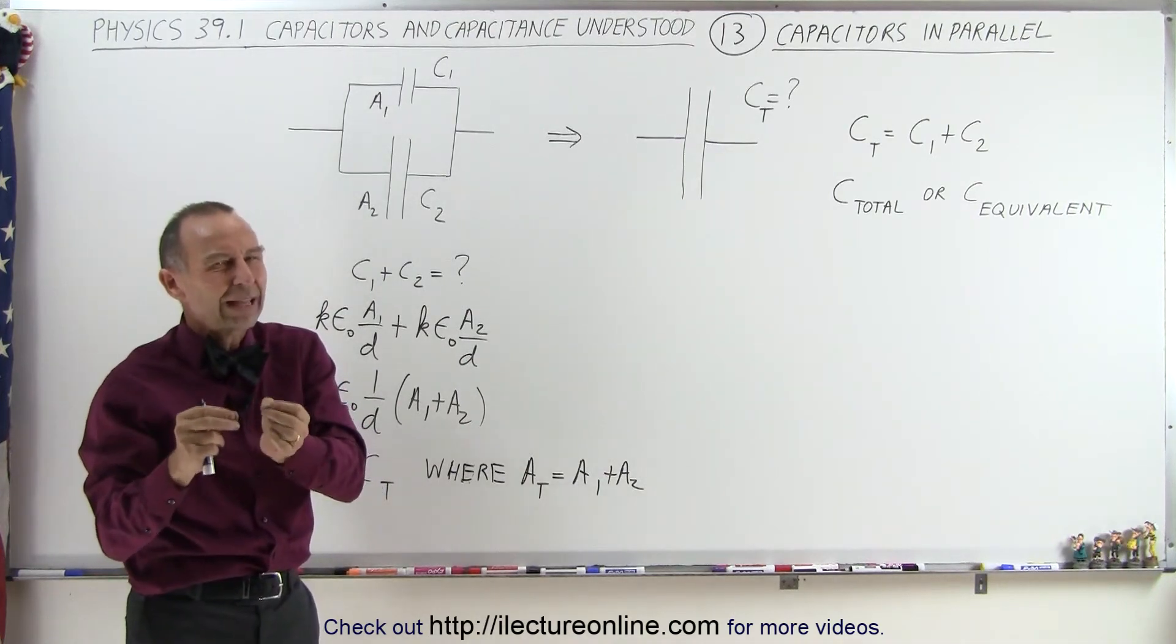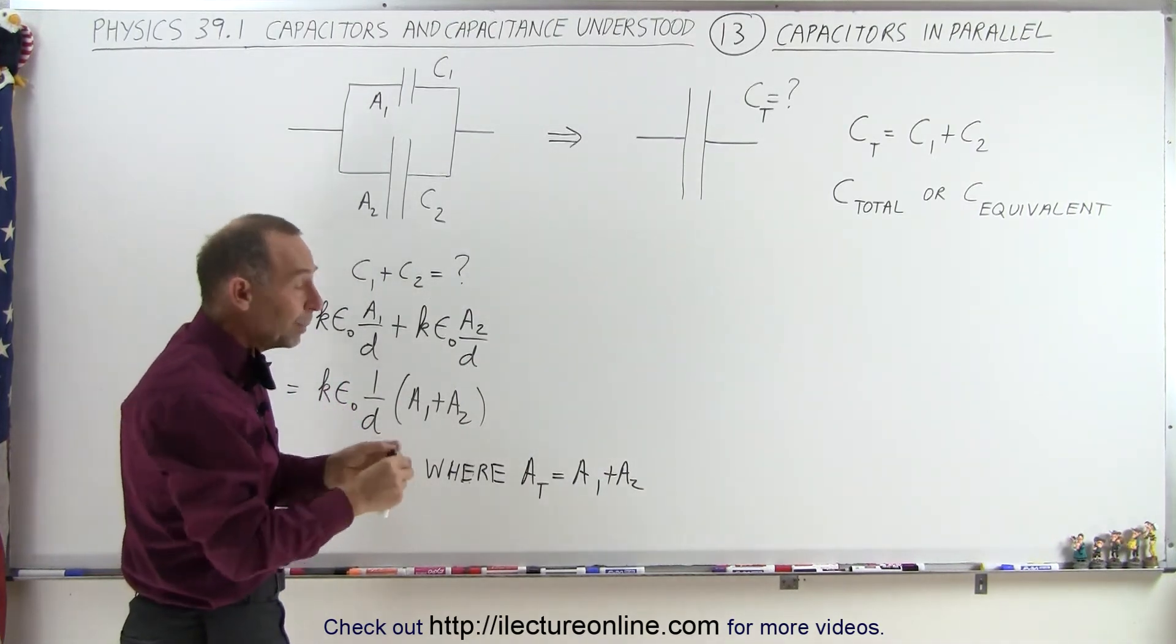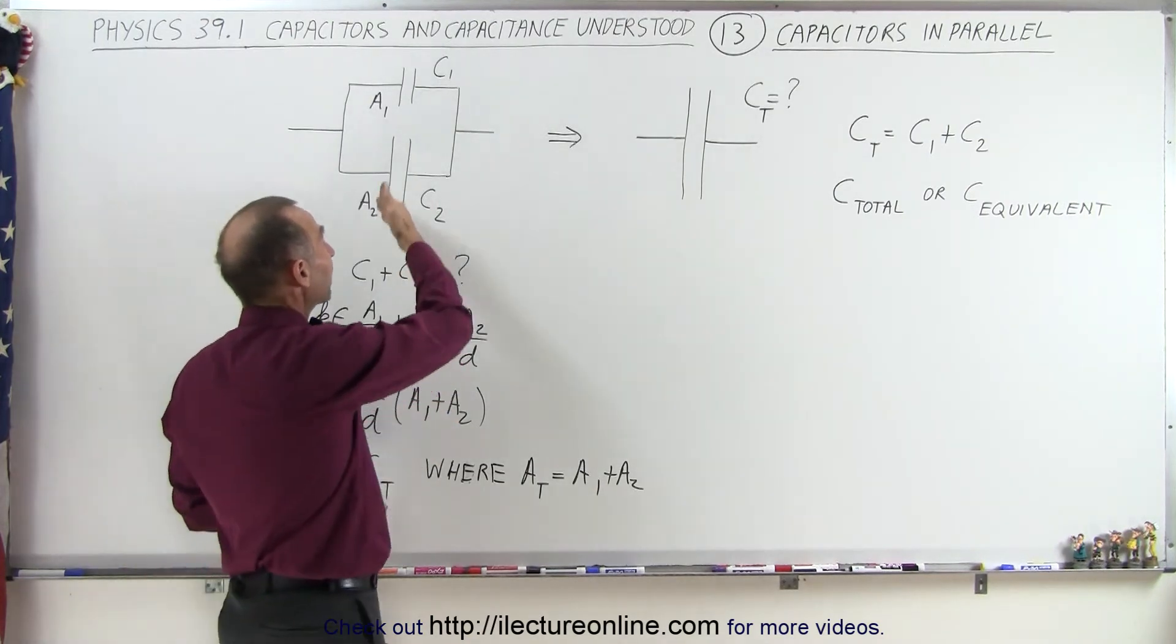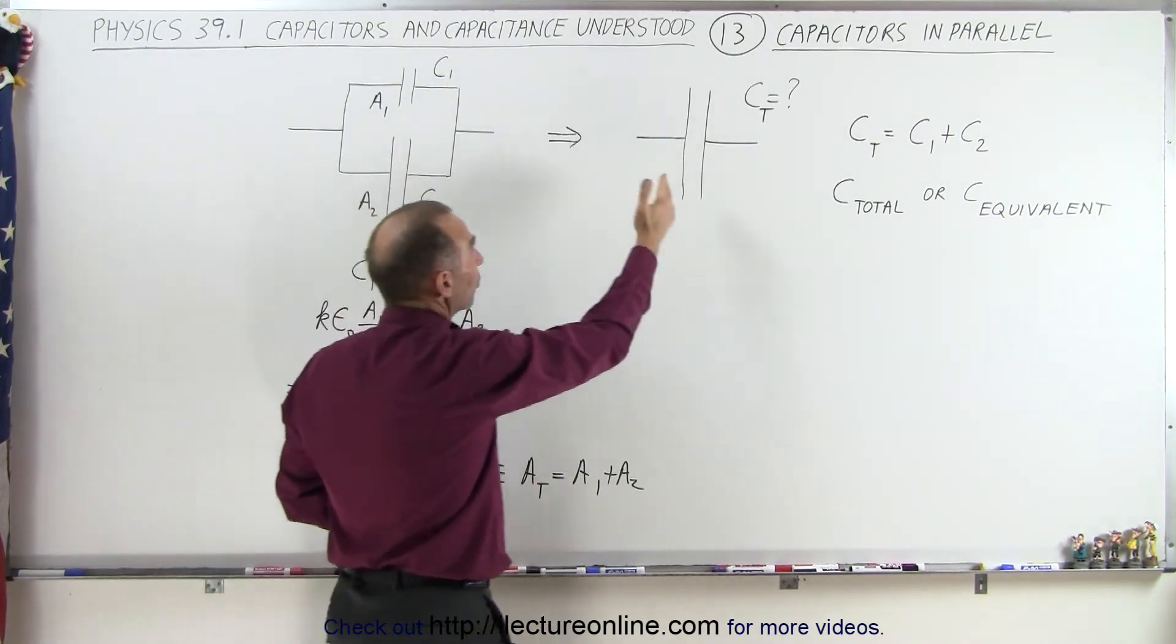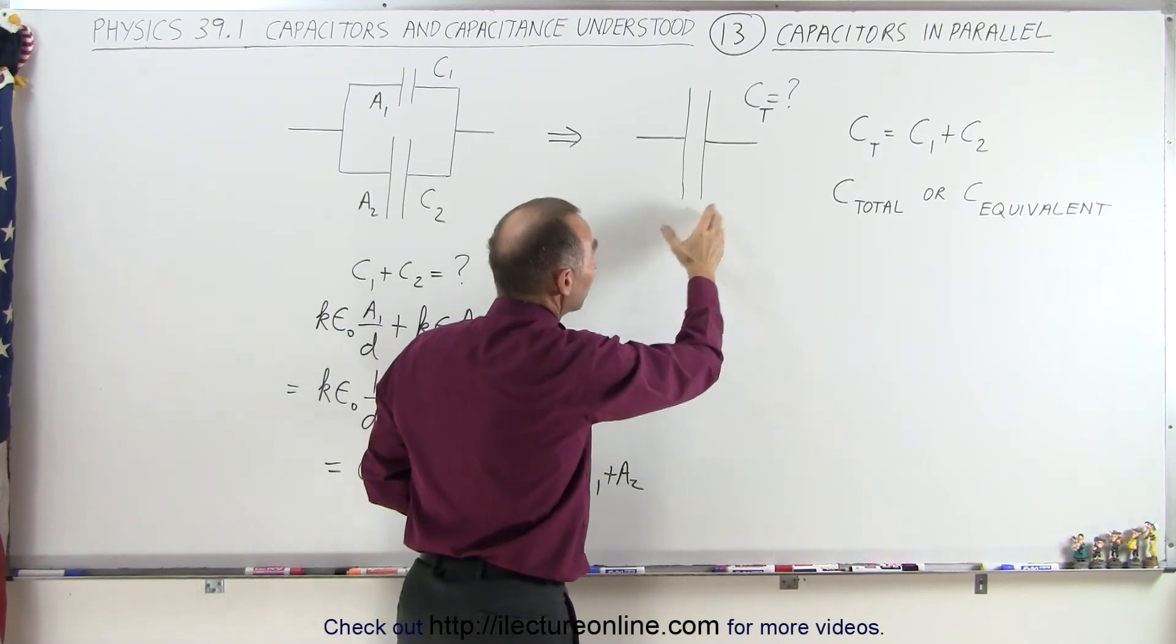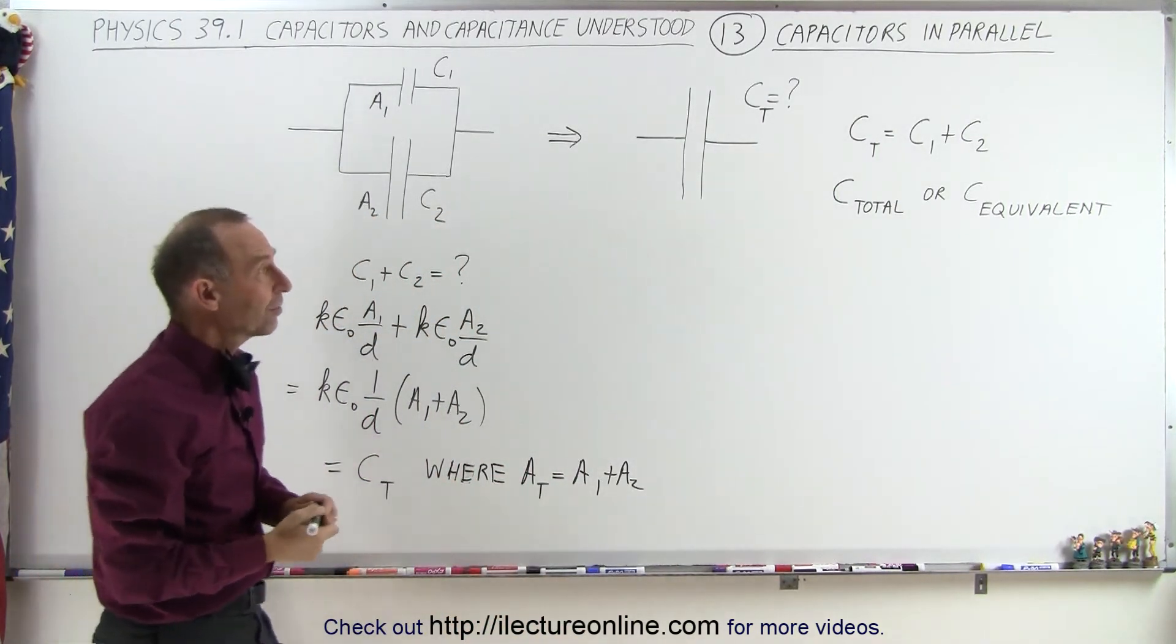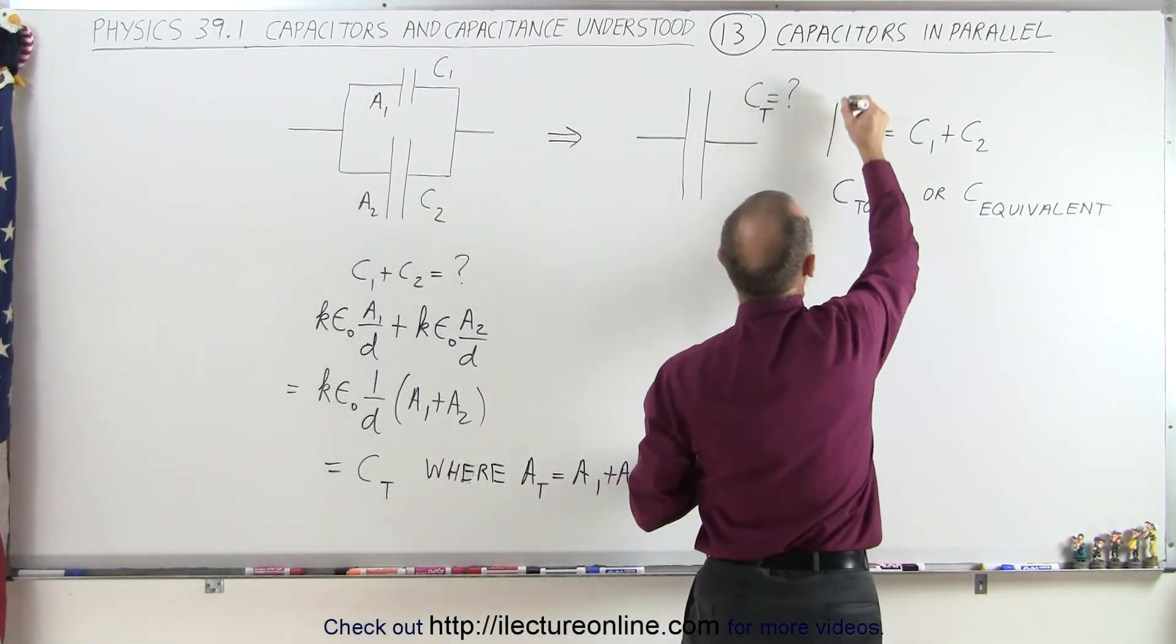Now, it doesn't necessarily have to be exactly that—the distances could be different and so forth—but in essence, when we connect capacitors in parallel, the equivalent is simply equal to the algebraic sum of the two capacitors, and this is always the case.